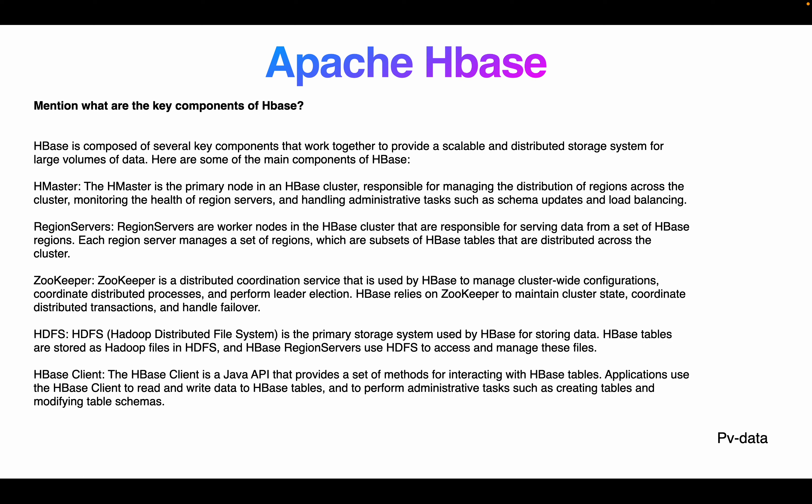What are the key components of HBase? This is a very important topic. The five key components are: H Master, Region Server, ZooKeeper, HDFS, and HBase Client. These components work together to provide a scalable, distributed system for large volumes of data. H Master is the primary node in the HBase cluster, responsible for managing and distributing regions across the cluster, monitoring the health of region servers, and handling administrative tasks such as schema updates and load balancing.